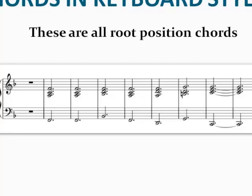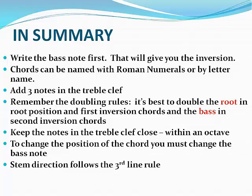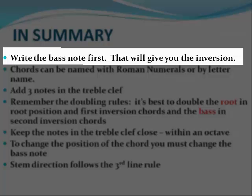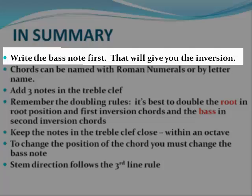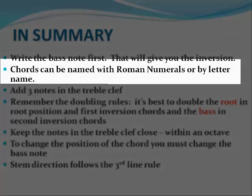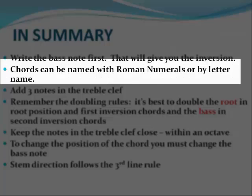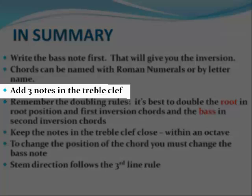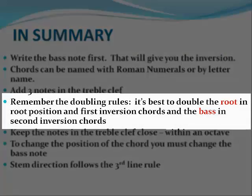Let's go over what we've covered in this module. When you're writing in keyboard style, always begin with the bass note — the bass note will give you the inversion. There are two ways of naming the chords: you can name them with the letter name and quality, or by the Roman numeral. Uppercase Roman numerals are used for major keys and lowercase Roman numerals are used for minor keys. After you have your bass note written, then you can add the three notes in the treble clef. It's very important to remember the doubling rules: double the root in root position and first inversion chords, and double the bass in second inversion chords.